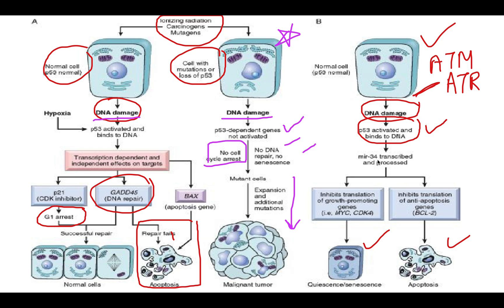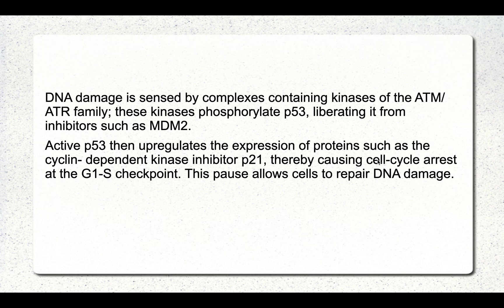When DNA damage is sensed by ATM and ATR, specific P53 target genes are activated. The BAX gene is an apoptotic gene that triggers apoptosis. The GADD45 gene is a DNA repair gene. The P21 gene is a CDK inhibitor that puts the cell in G1 arrest, allowing successful repair. Loss of P53 means the cell cannot repair itself and carcinogenesis proceeds.